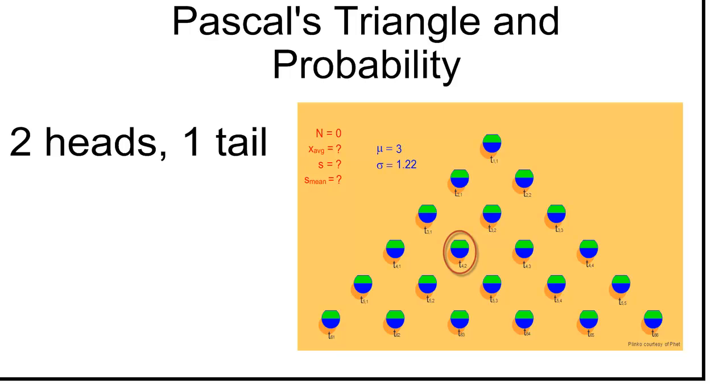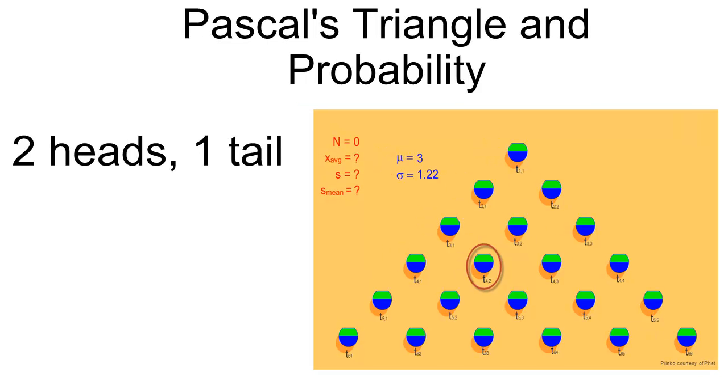And so now let's consider the probability of getting two heads and one tail, and we're not at all concerned about what order they come in. So in other words, we're interested in this position right here.